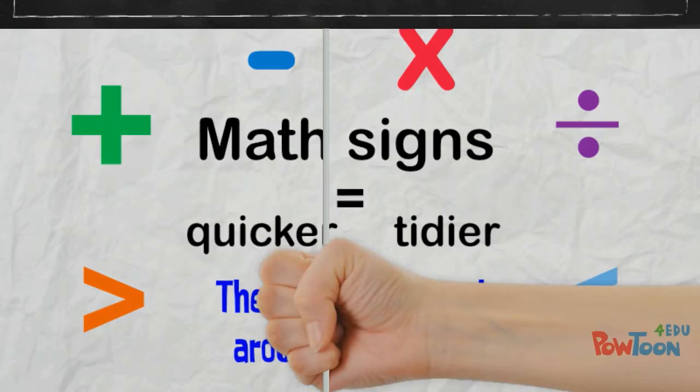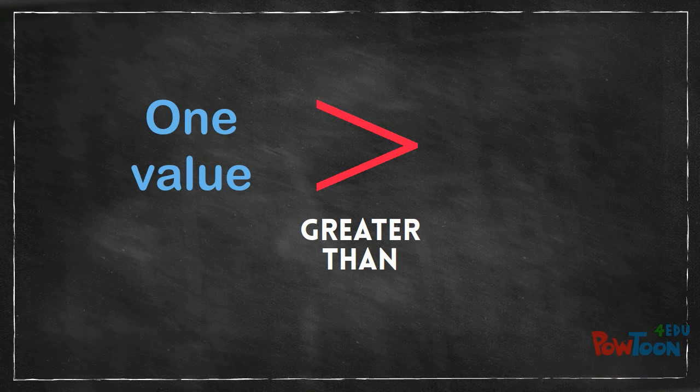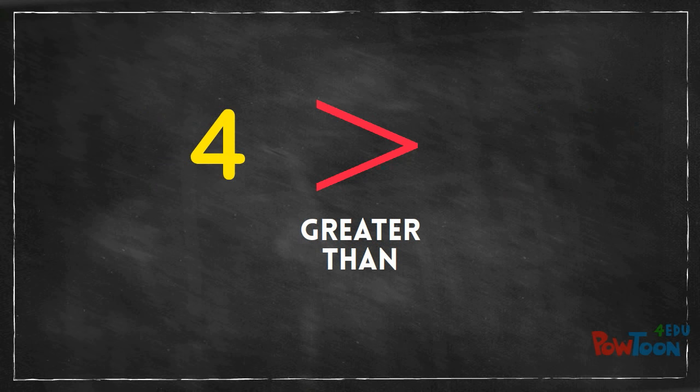Have you seen this before? This sign means greater than. We use it to show that one value is greater than another. So we could write 4 is greater than 2. We know this statement is true, 4 is more than 2.